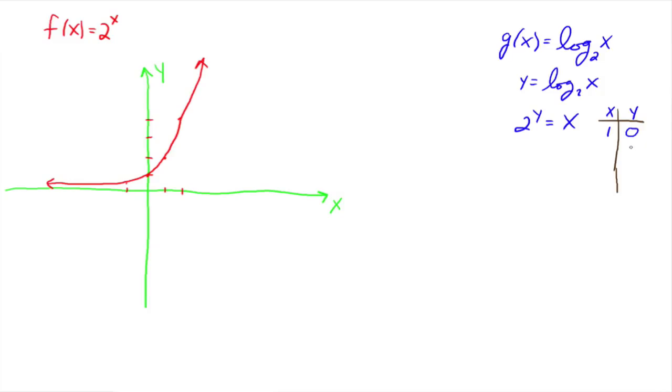We're going to plug numbers in for y. So when y is zero, x is one. When y is one, x is two. When y is two, x is four. When y is three, x is eight. When y is negative one, x is a half. So forth and so on.